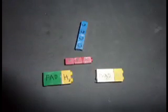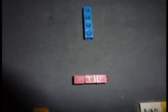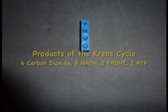The energy release forms ATP from ADP and phosphate. The products of the Krebs cycle are six molecules of CO2, eight molecules of NADH, two molecules of FADH2, and two molecules of ATP.